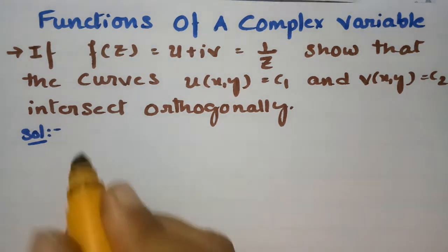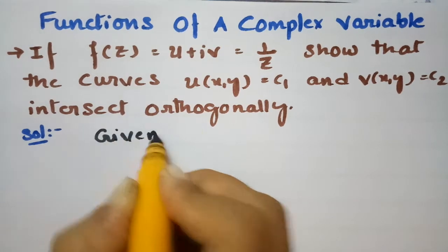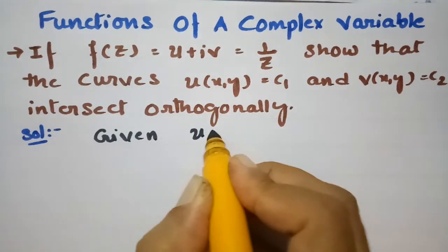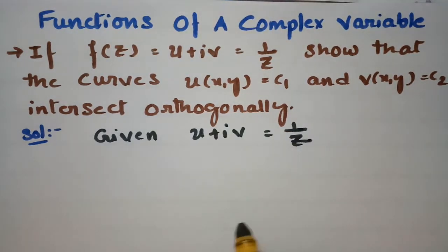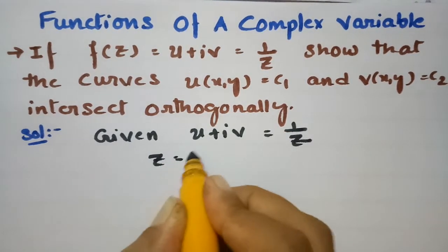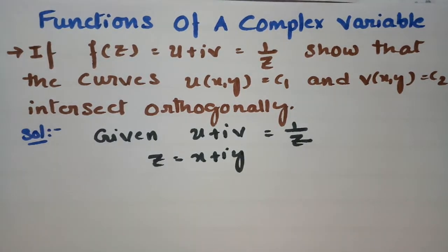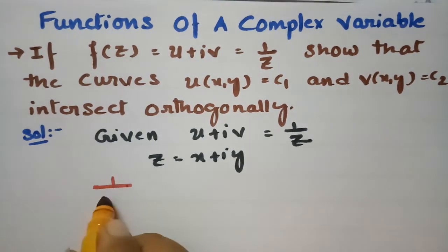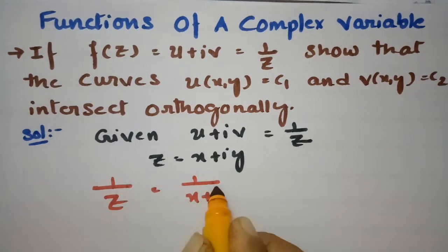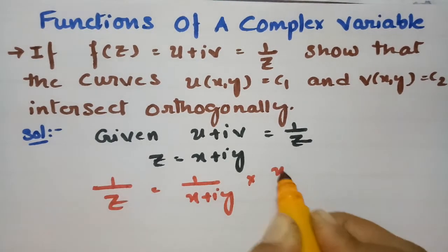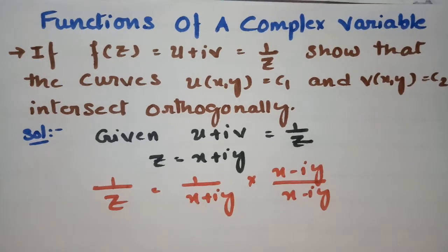For this, as we know that u + iv = 1/z, and z is nothing but x + iy. So 1/z is equal to 1/(x + iy). I will multiply numerator and denominator by (x - iy).